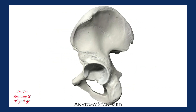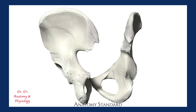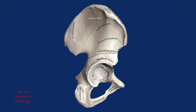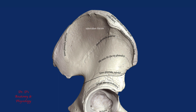Here are both hip bones suspended in the orientation they would have in the body. We are going to look first on the lateral side of the right hip bone. Here is a closer look at the ileum, the superior bone. We can divide the ileum into the body, which is the part of the bone that contributes to about two-fifths of the acetabulum, or socket of the hip joint, which I described in a previous video.